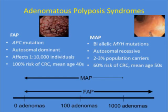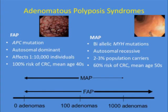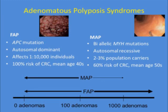Switching to the adenomatous polyposis syndromes — FAP and MAP. FAP is due to an APC mutation; it's autosomal dominant and occurs in 1 in 10,000 individuals, with nearly 100% risk of colorectal cancer at mean age 40 if colectomy is not done. MAP is the only recessive hereditary colon cancer syndrome, due to biallelic MYH mutations, with a carrier frequency of 2–3%, about 60% risk of colorectal cancer, and mean age about a decade later than FAP.